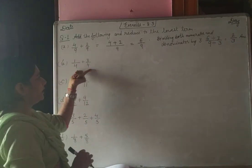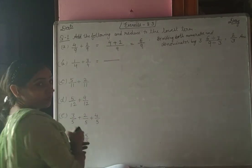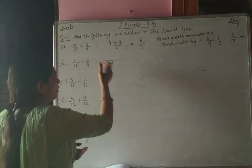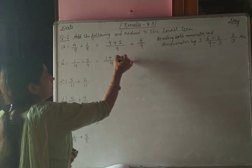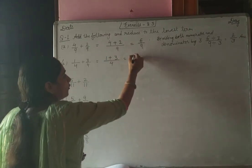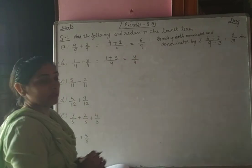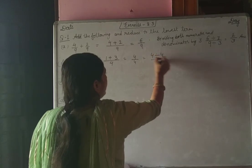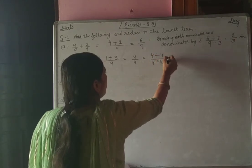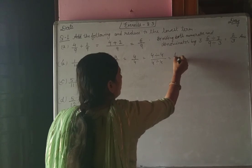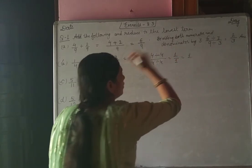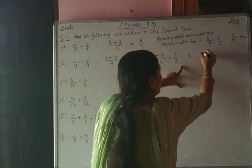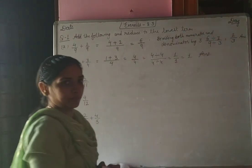Next: the denominators are the same, so LCM is 4. 1 plus 3 gives 4 by 4. Since both numerator and denominator are 4 and divisible by 4, dividing gives 1 by 1, which means the fraction reduces to a whole number — complete.